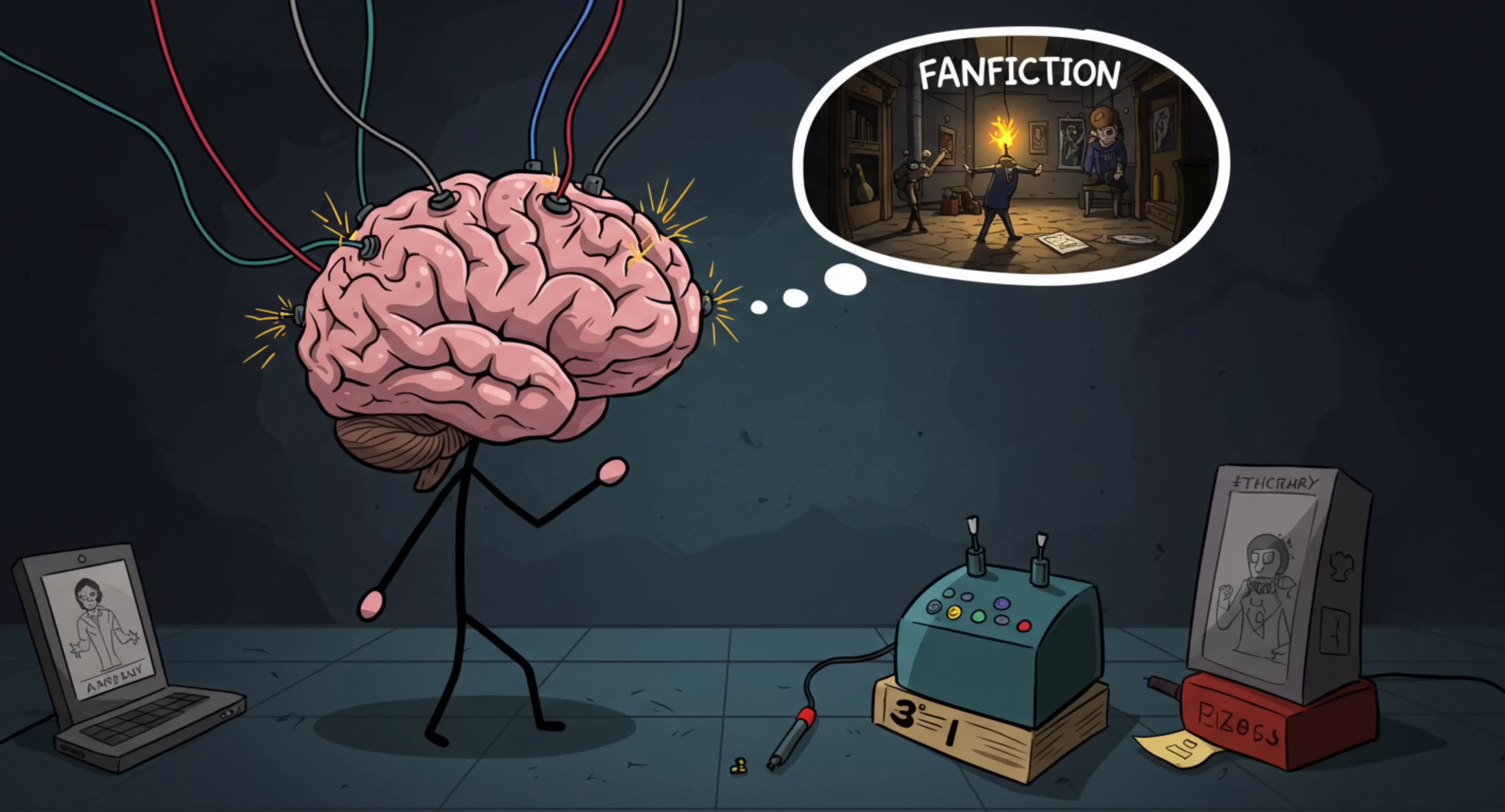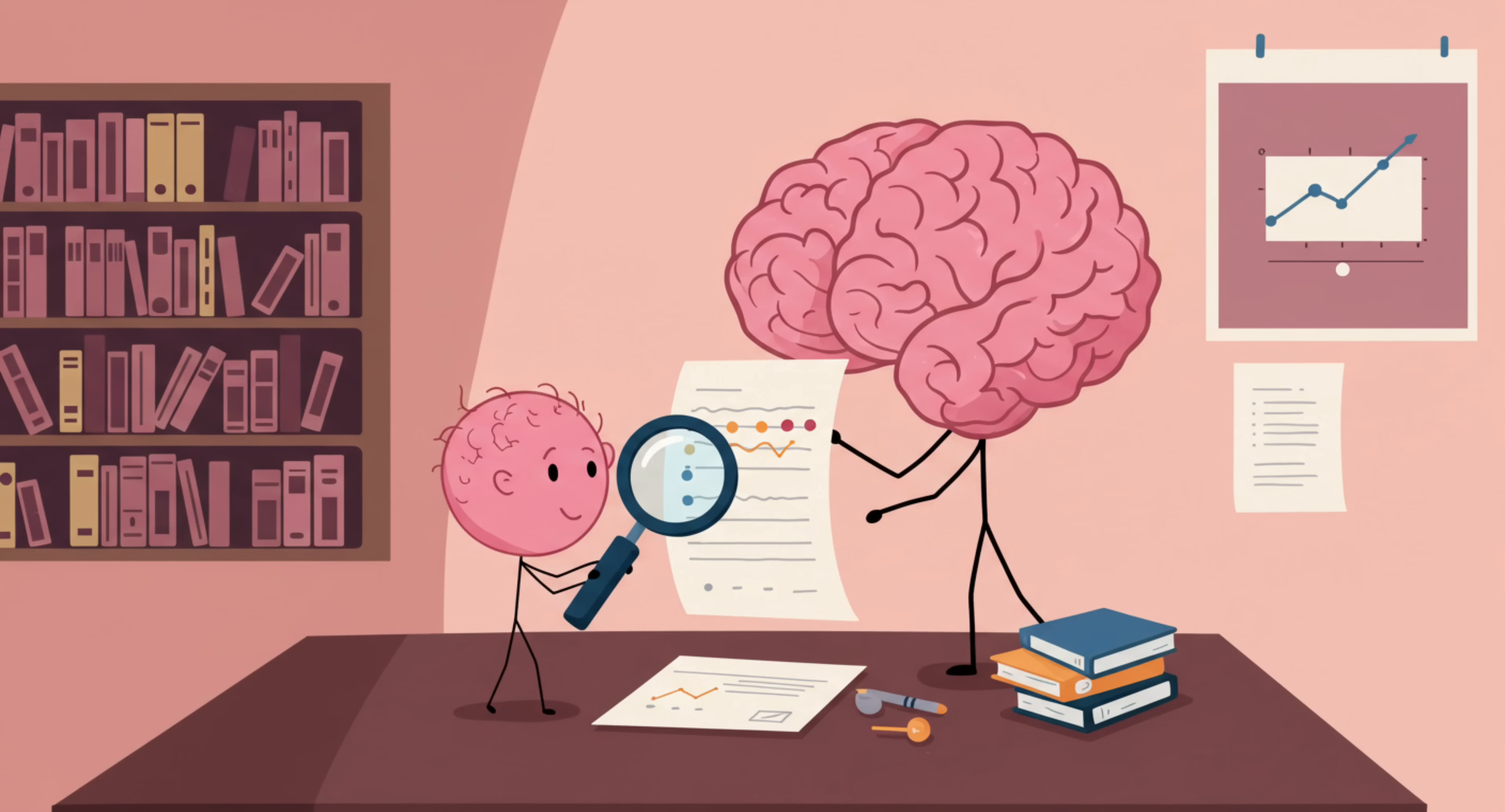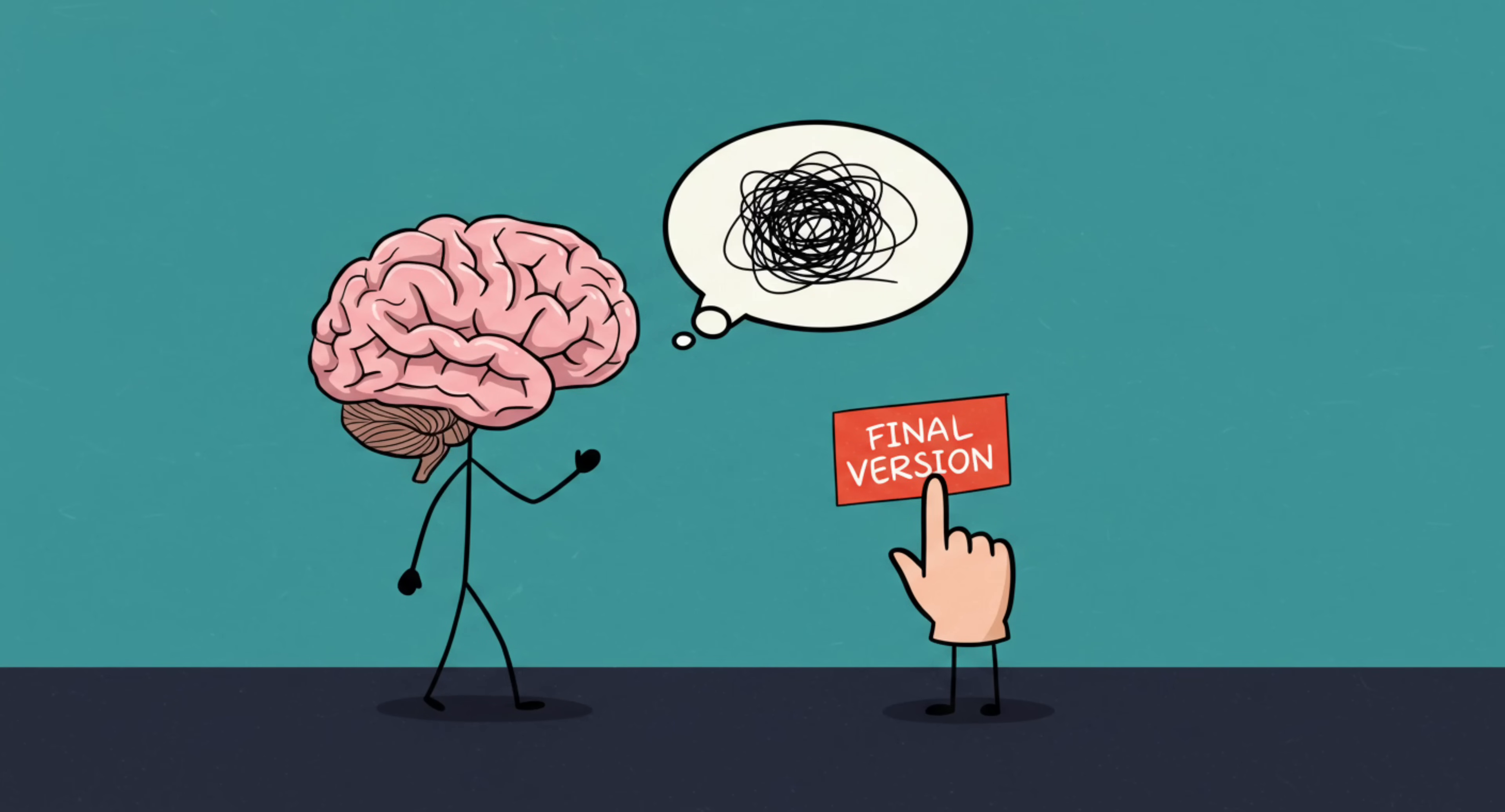Stress made your brain cross the wires, and now your memory is basically fan fiction. This happens because stress screws with the way short-term memories get consolidated into long-term ones. Normally, the hippocampus acts like a careful editor. Under stress, though, it just throws everything into one messy document. Later, when you remember, your brain is pulling random lines from that messy draft and swearing it's the final version.